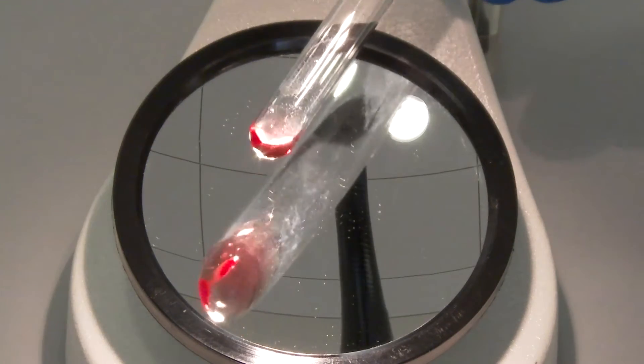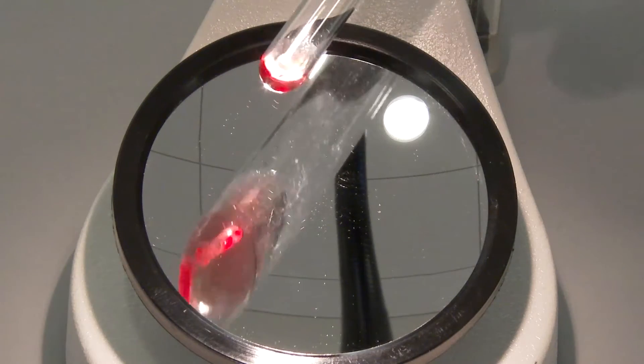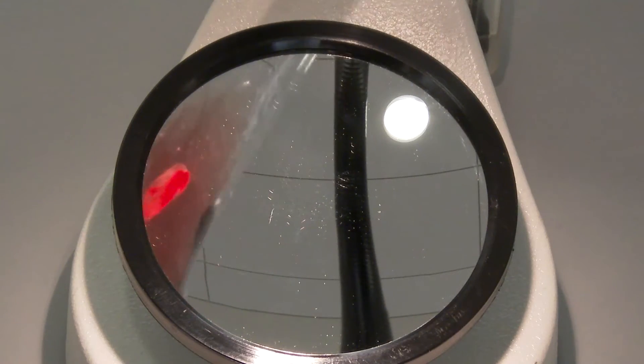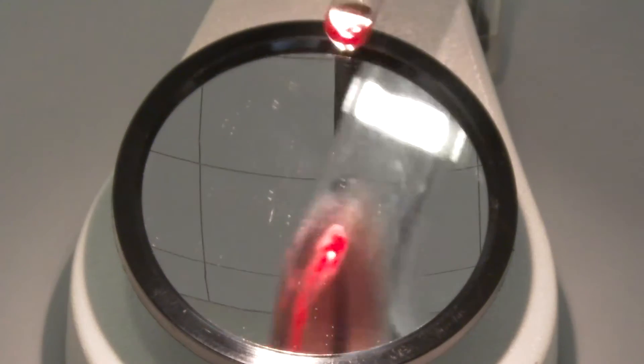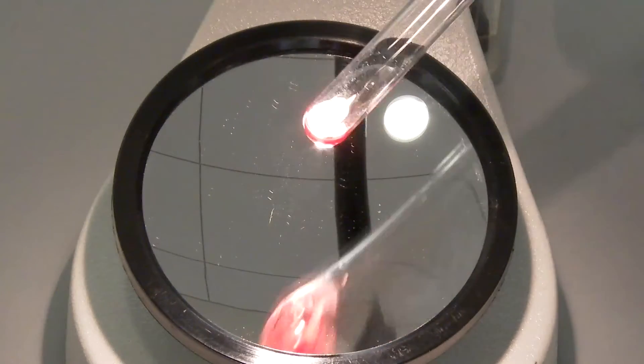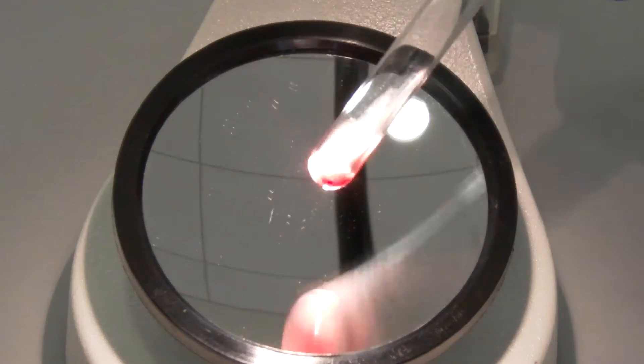The supernatant should always be checked for the presence of a pink or red color, which indicates hemolysis, before shaking the test tube. Once cells have dispersed into the solution, hemolysis may be difficult to detect.